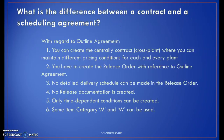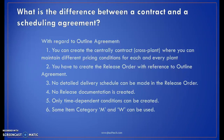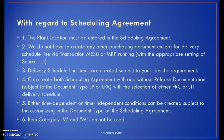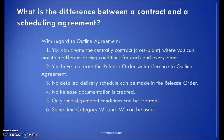What is the difference between a contract and a scheduling agreement? Regarding the outline agreement (contract), you can create it centrally — a cross-plant contract where you can maintain different pricing conditions for each plant. You have to create a release order with reference to the outline agreement. No detailed delivery schedule can be made in the release order, and no release document is created. Only time-dependent conditions can be created. Item categories M and W can be used in a contract.